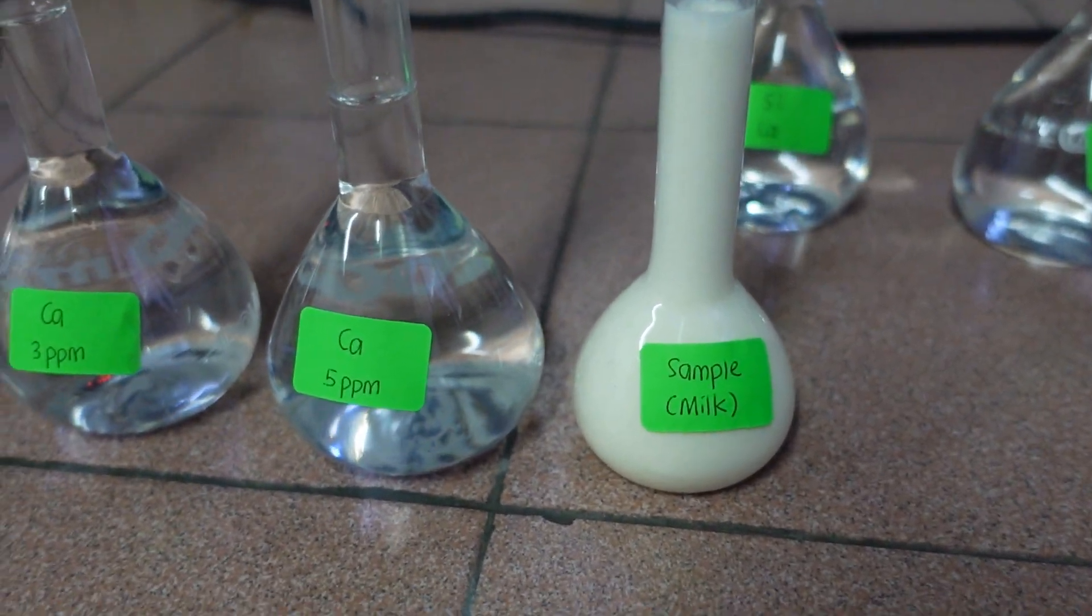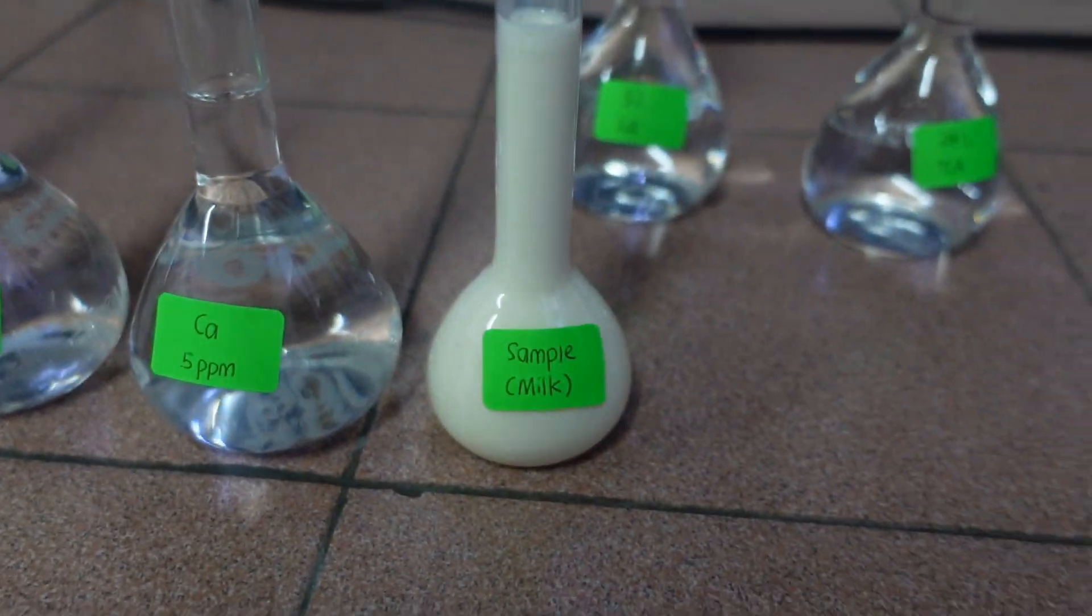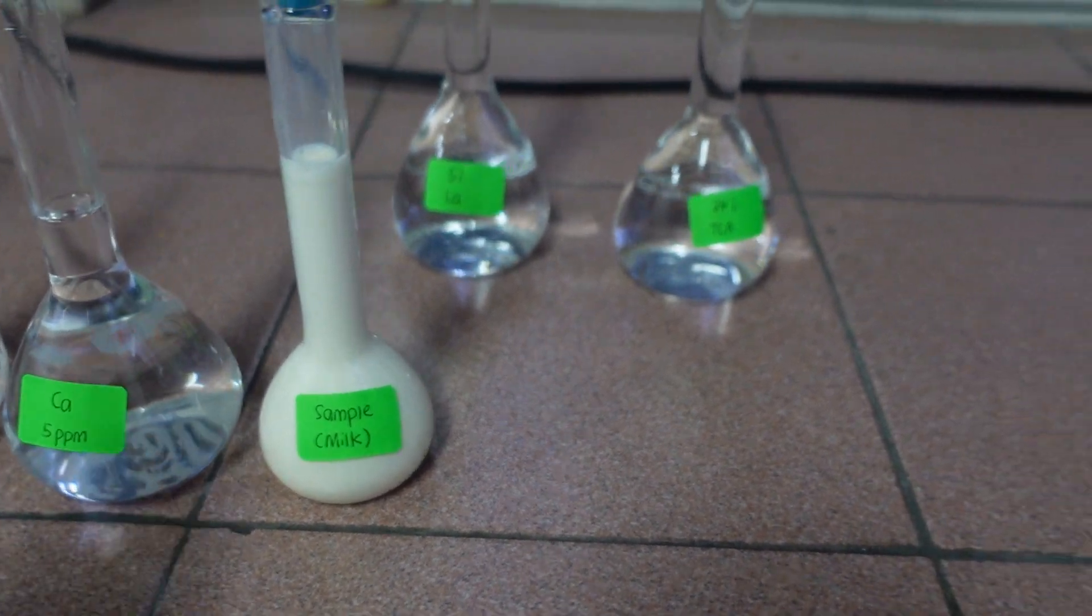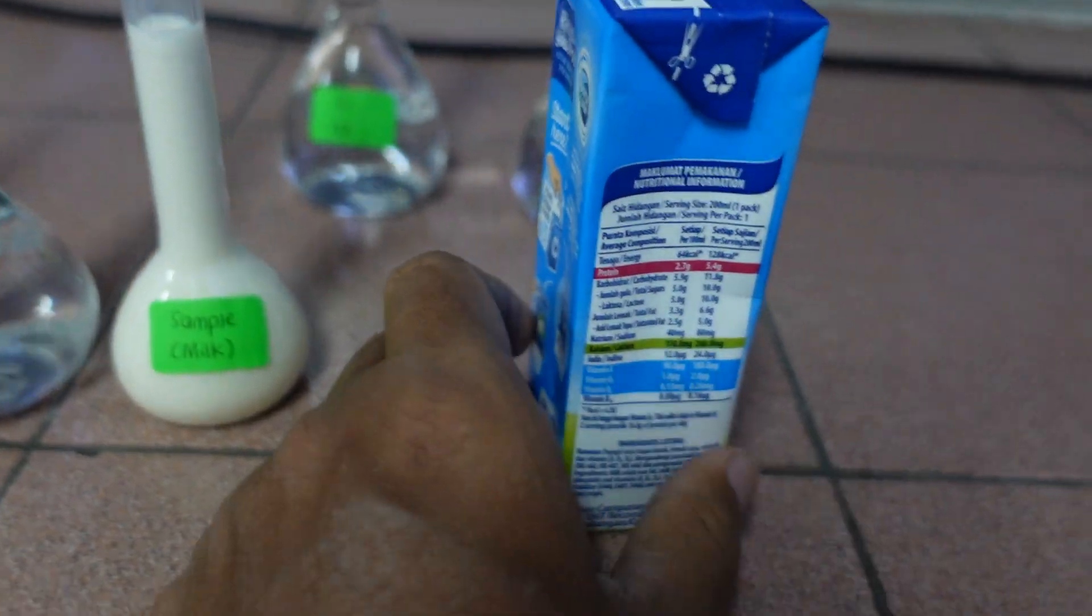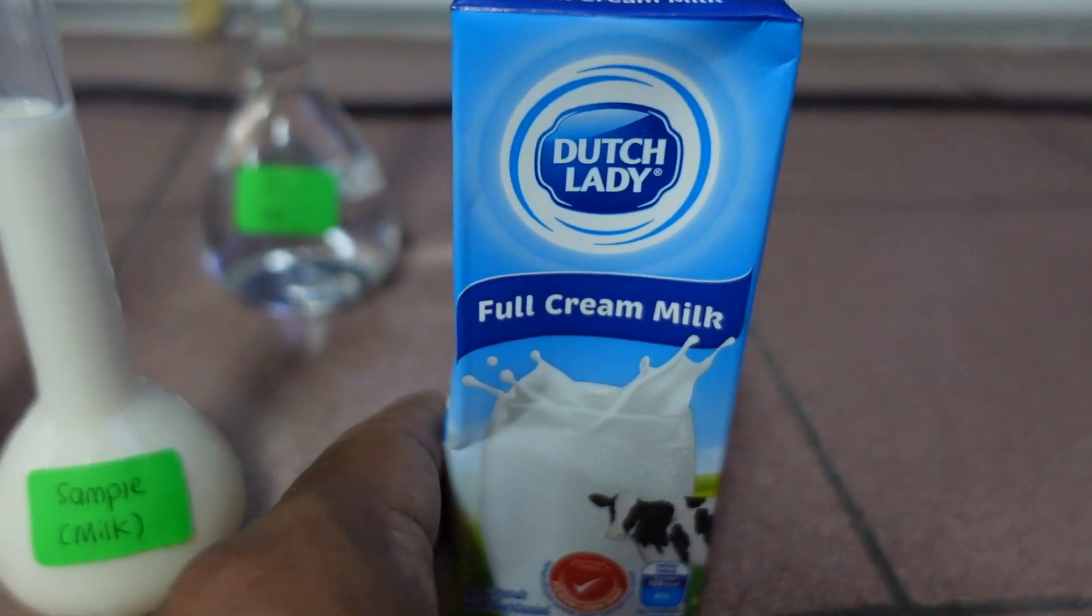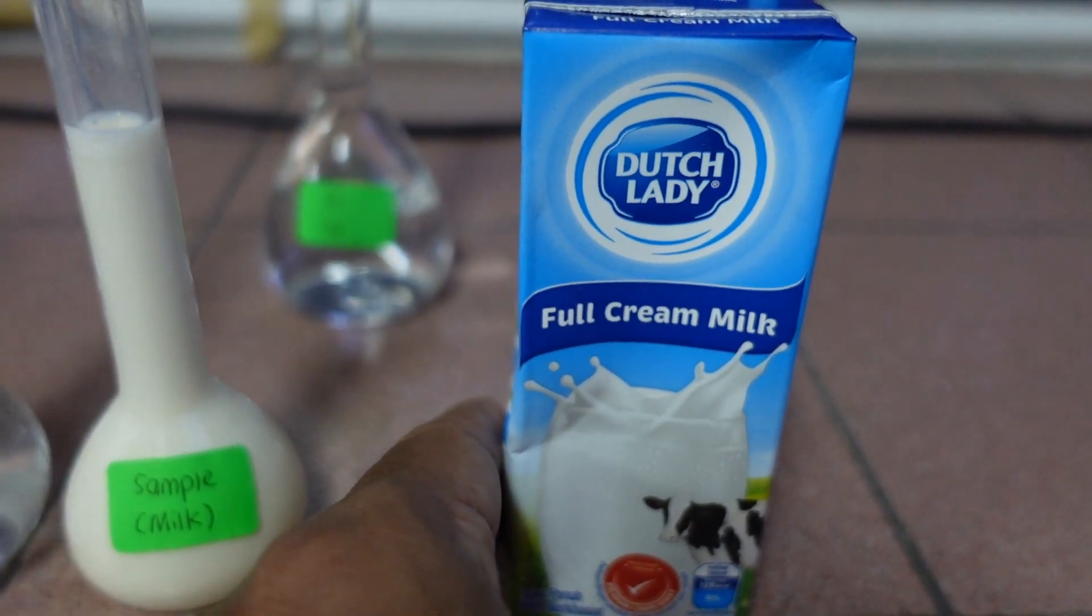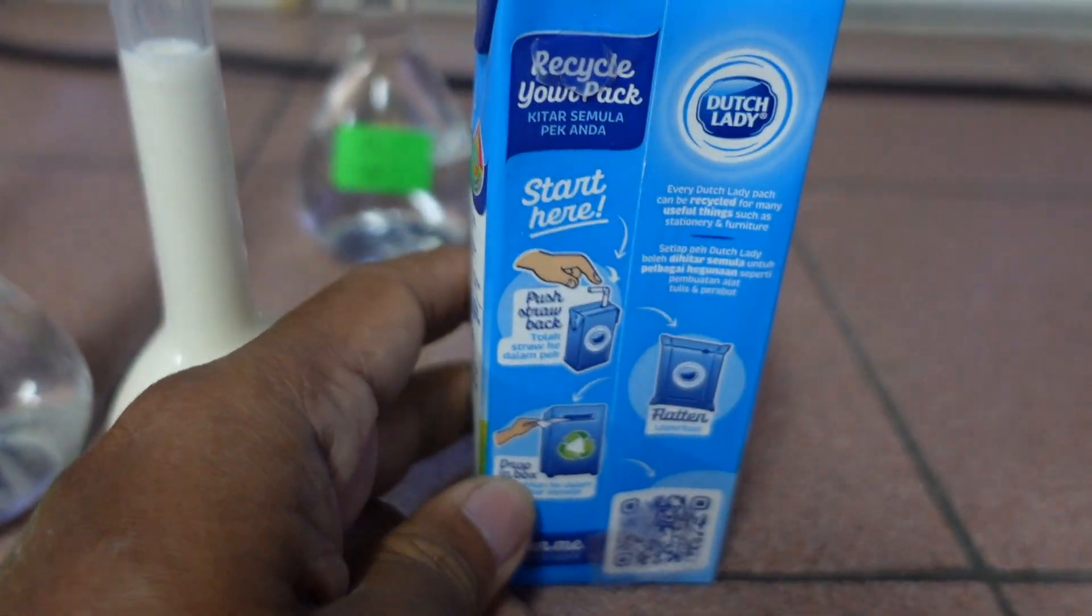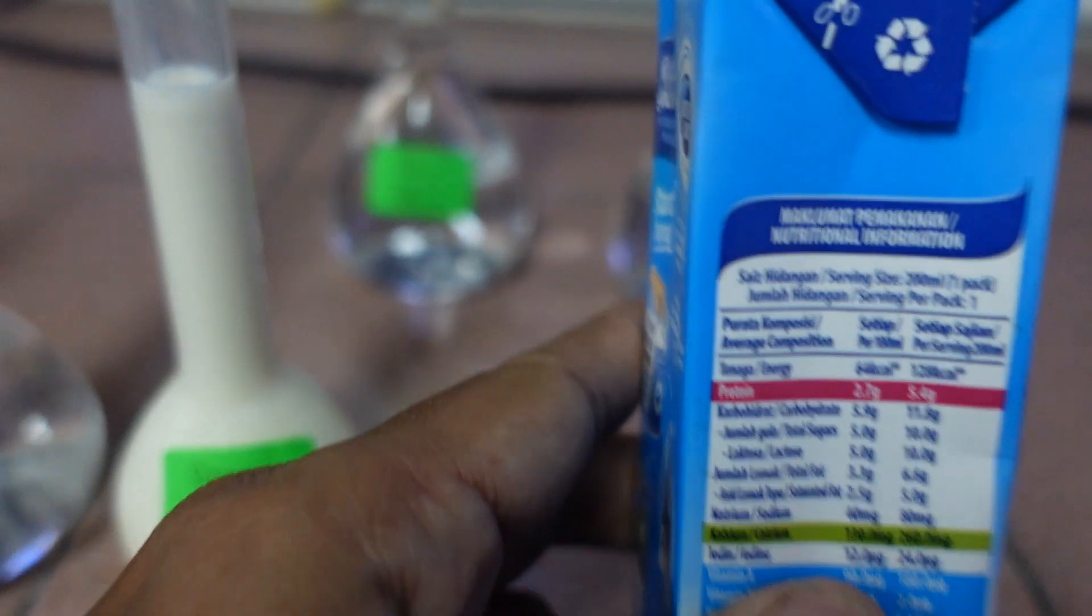This is our sample. Some samples we need to do dilution. For today, we are going to do this sample as is, and also we are going to do another dilution. I got a sample from Dutch Lady, full cream milk. For reference later, you might want to refer at the label of the bag to see the amount of calcium.